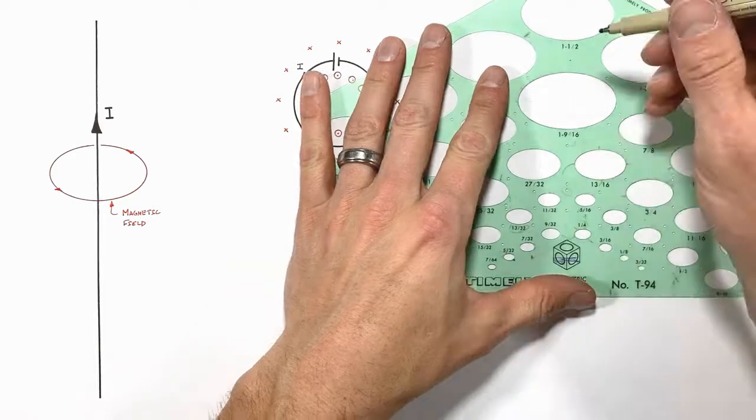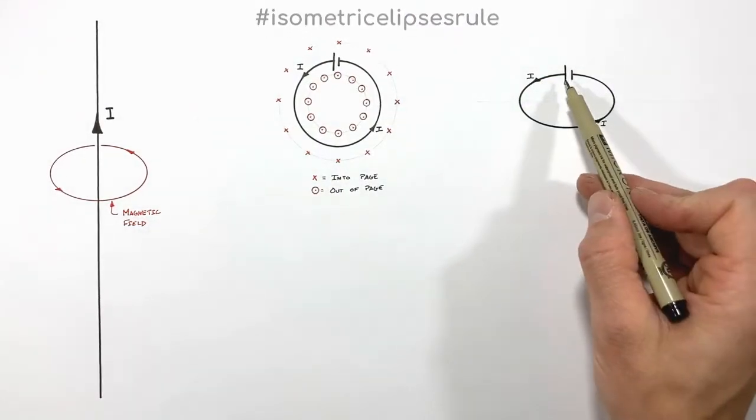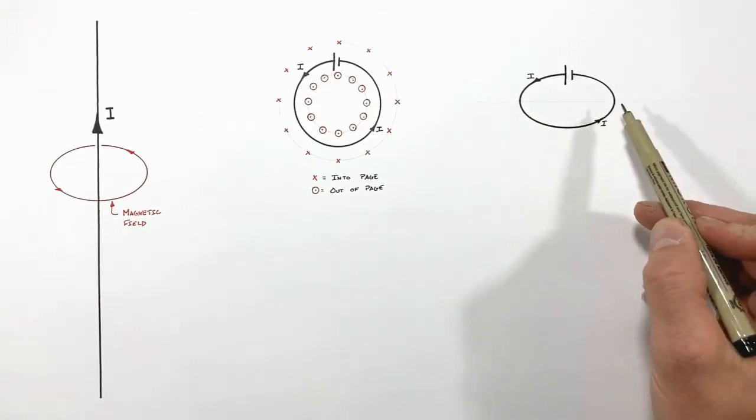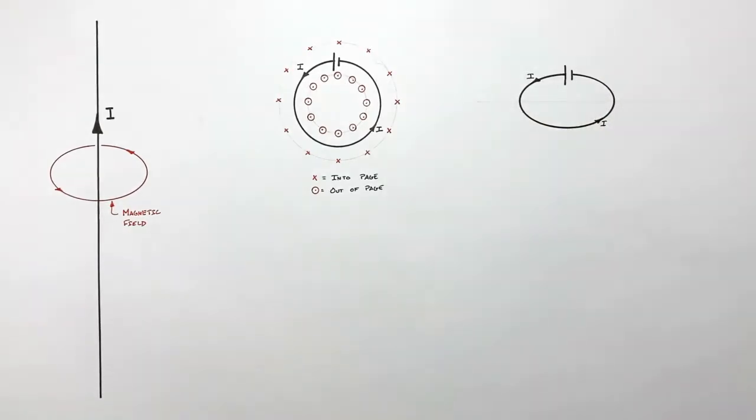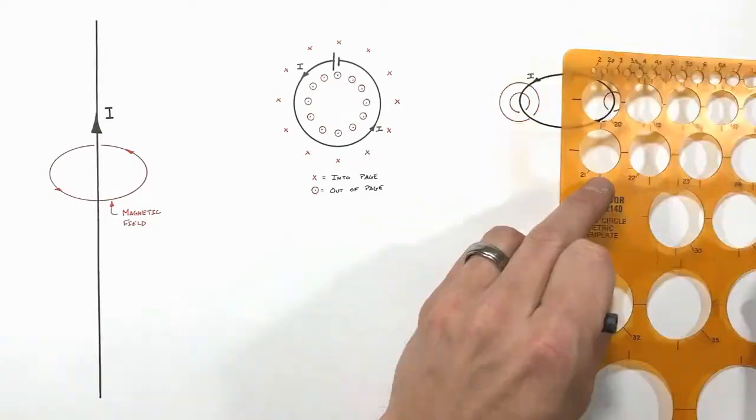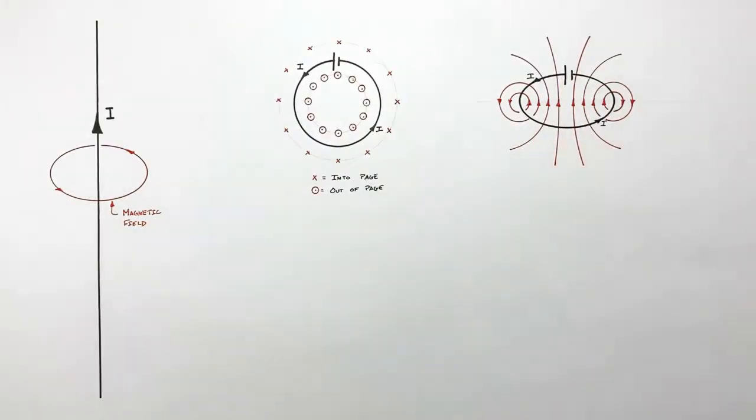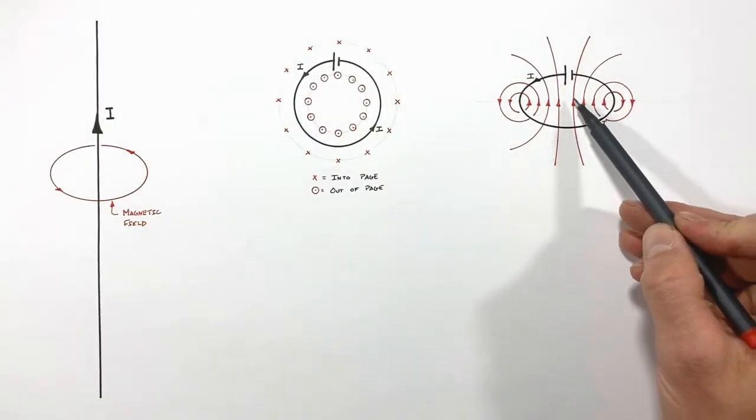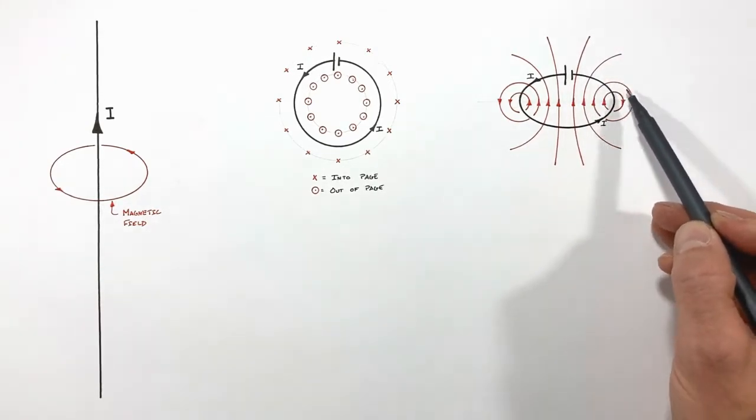Looking at our battery and our loop of current-carrying wire from an angle, we'll see a magnetic field that looks a bit like this. You can see the magnetic field is coming up out of the middle of this loop of wire and then back down around the outside of the wire.